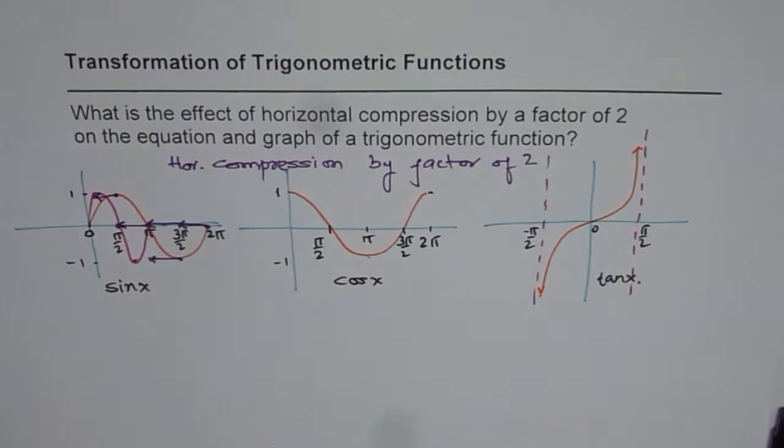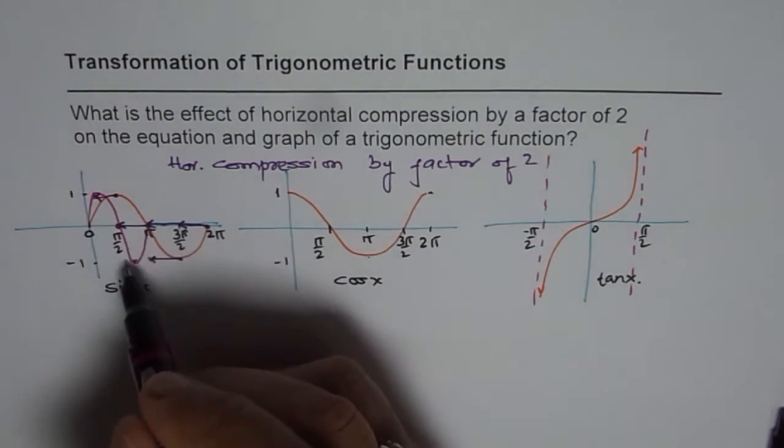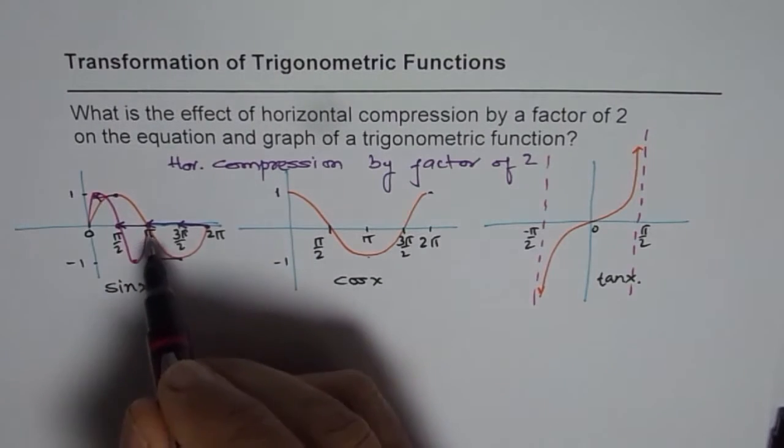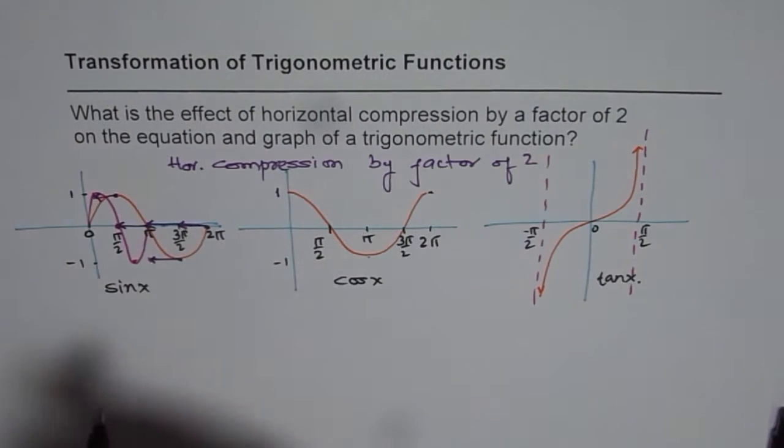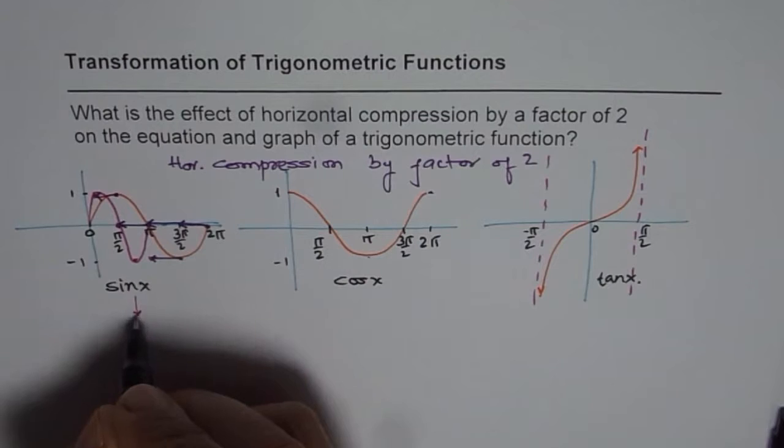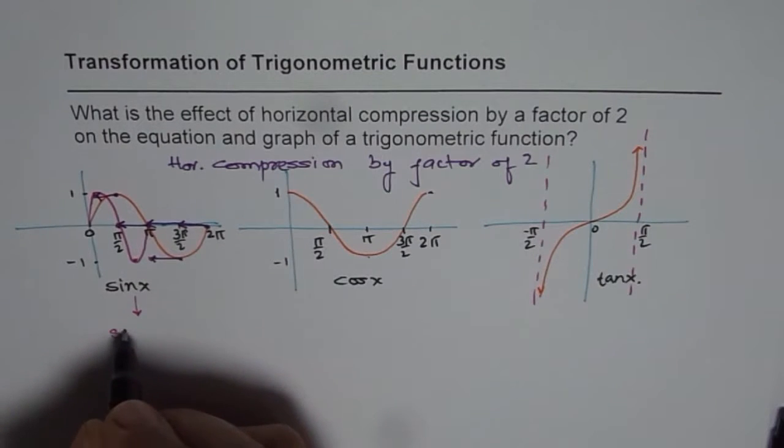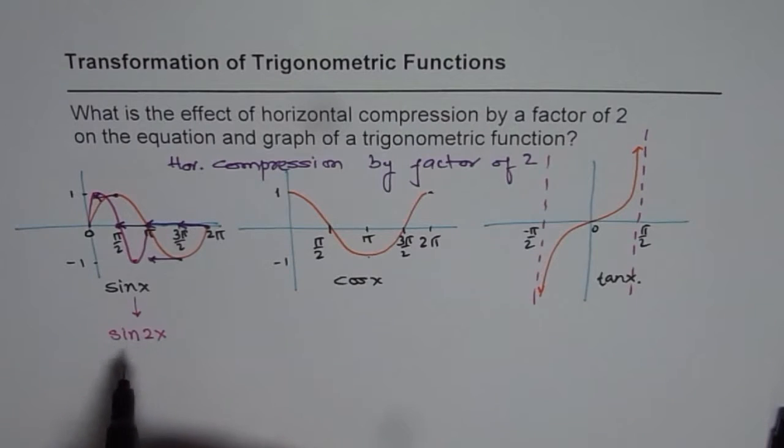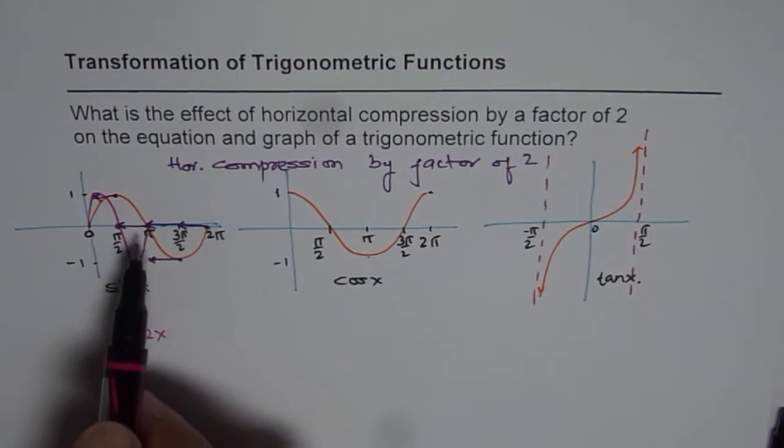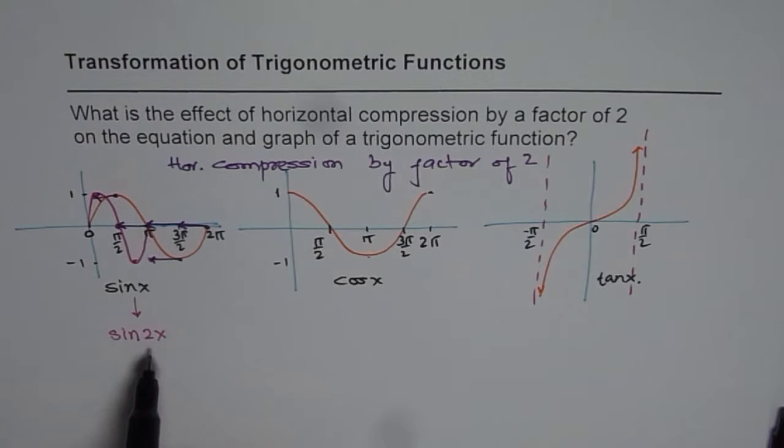So that will be one sine wave. And the time period for this sine wave is going to be pi and not 2 pi. So the effect here will be that we will get the function as sine of 2x. So time period becomes pi, not 2 pi.